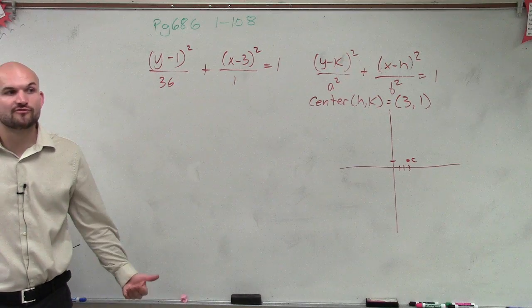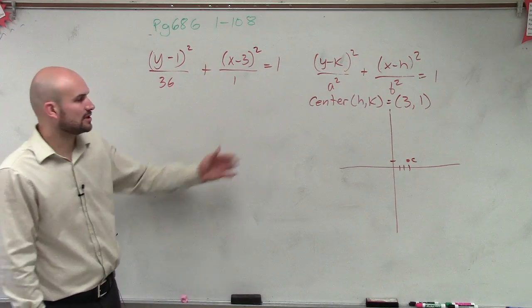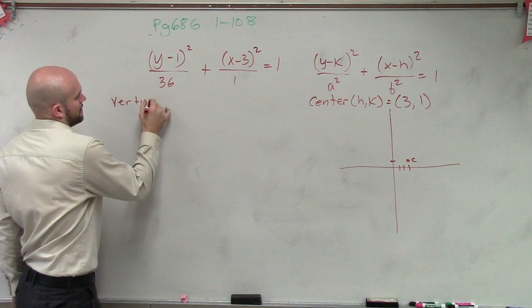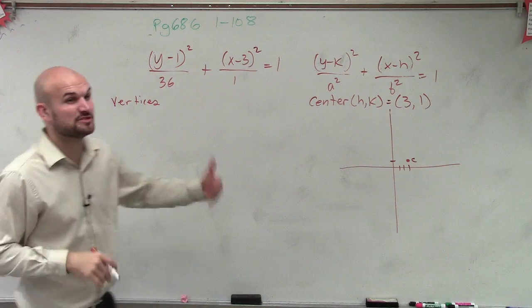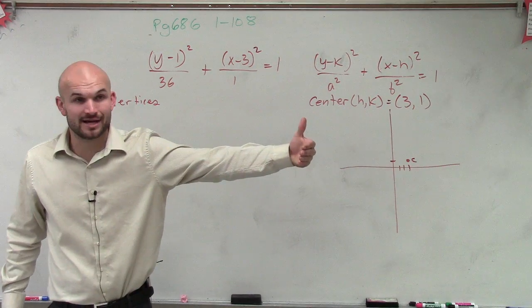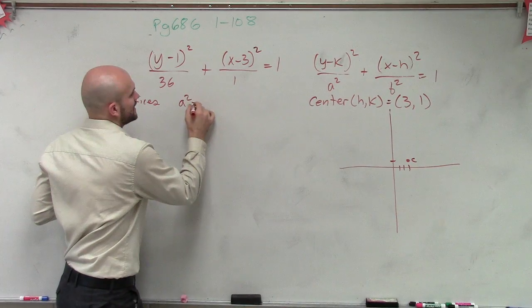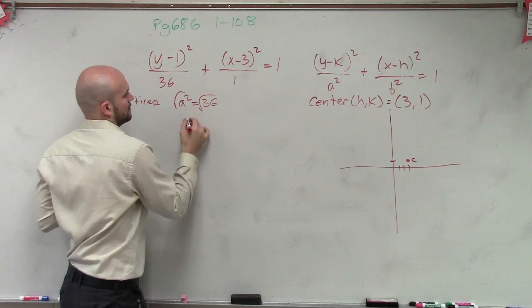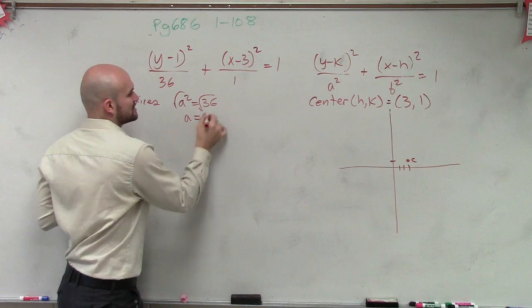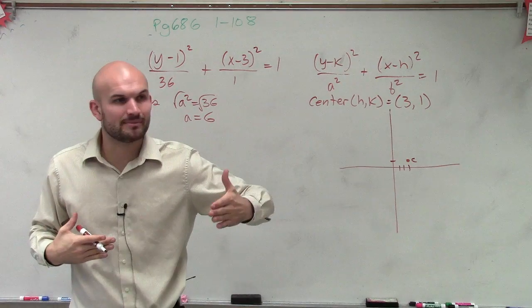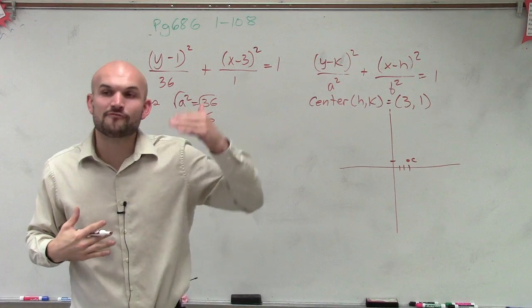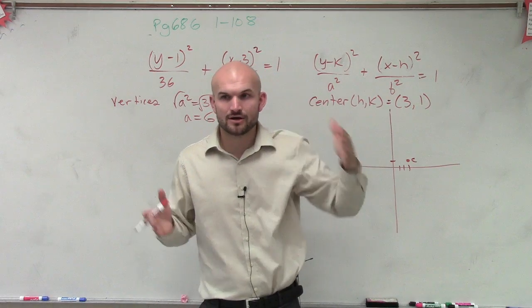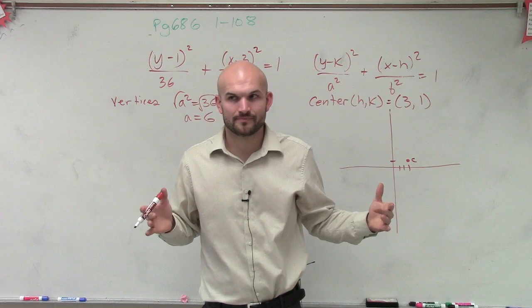Now we need to determine our vertices. Alright, so let's go and find the main vertices. So the vertices, remember, is going to be a distance of a, right, from the center. So if we know a squared equals 36, then we can say a equals 6. Now, since we determined, ladies and gentlemen, that this was a vertical ellipse, are my vertices going to be above and below the center or to the left and to the right of the center? Above and below.